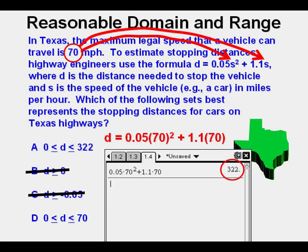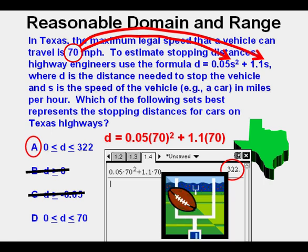So it comes down to 0.05 times 70² plus 1.1 times 70. And we get a stopping distance of 322 feet. And that's slightly longer than 100 yard football field.